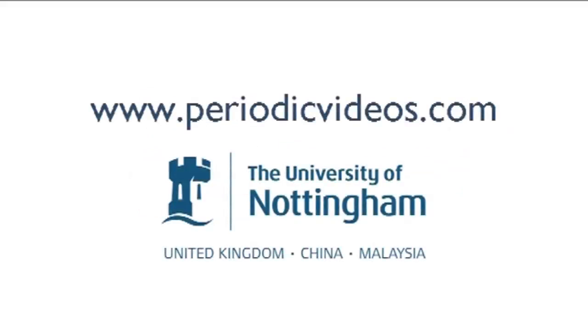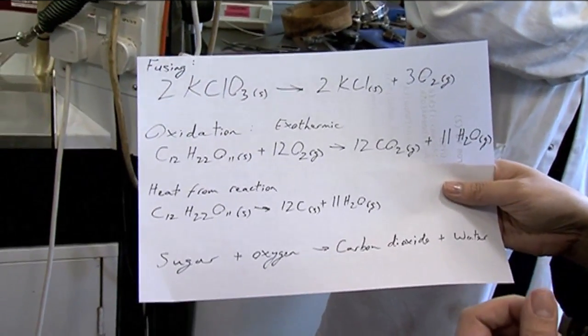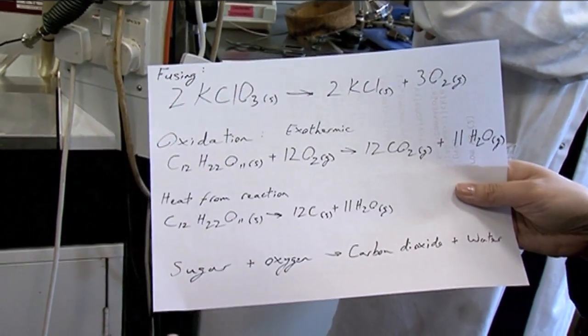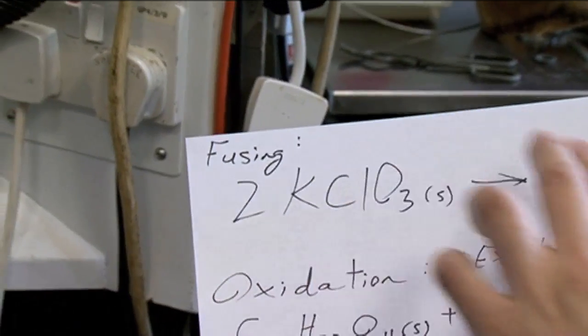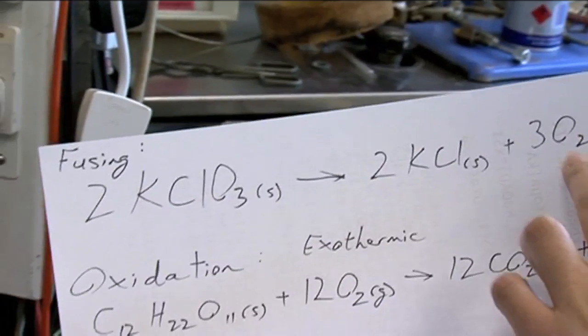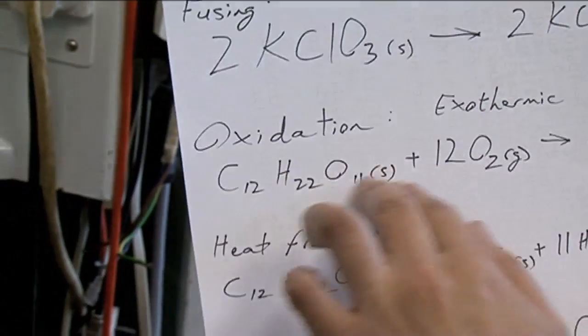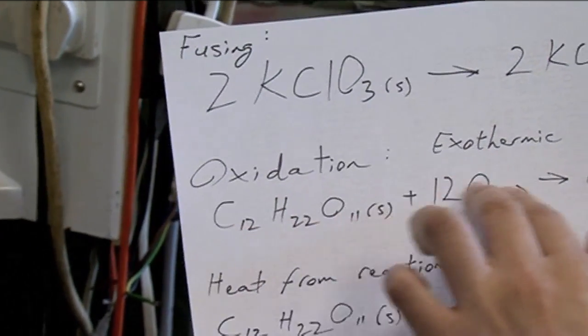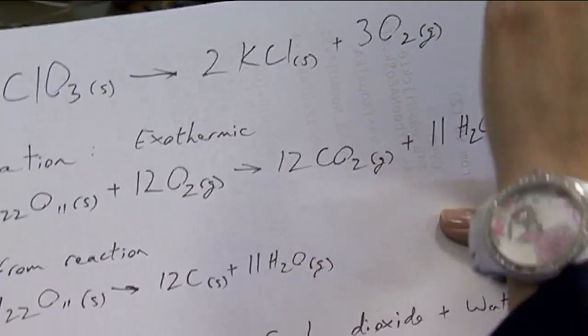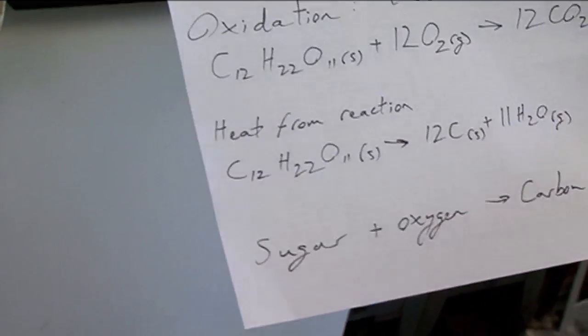We usually get requests and feedback from our viewers asking for the actual chemical reactions that go on. So to begin with, when we did the fusing where Neil was blowtorching the tube, that's the potassium chlorate there becoming potassium chloride and liberating the oxygen in the form of gas. And then the next thing that happened was the oxidation of the sugar. So there's your sugar structure and then it's reacting with the oxygen. It's a very exothermic reaction. It generates a lot of heat and it gives you carbon dioxide and water in the form of water vapour or steam.